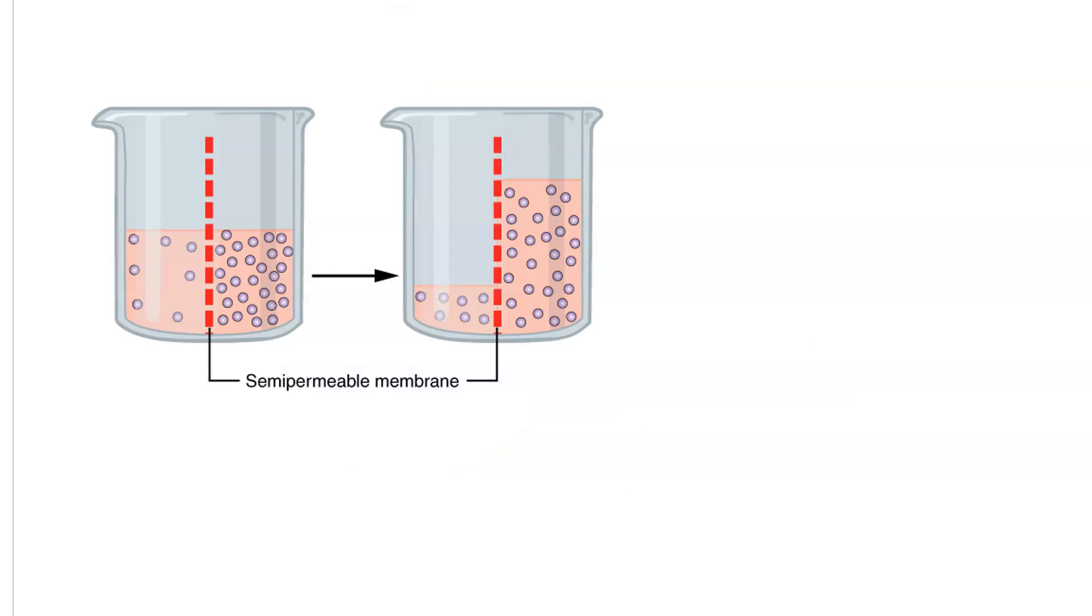Consider this scenario. You have a beaker that has a semipermeable membrane inserted into it to separate two halves of the solution. On the left-hand side, we start out with low concentration. And on the right-hand side, we have high concentration.